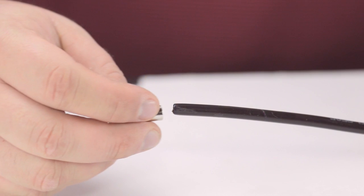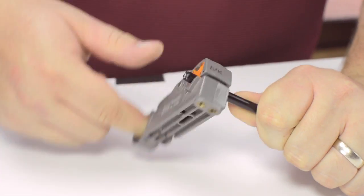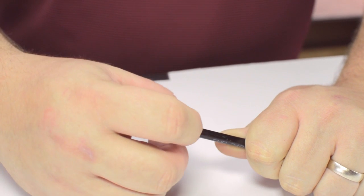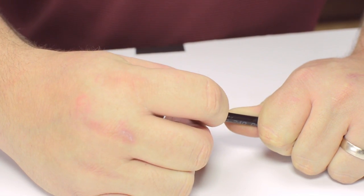Start by inserting the ferrule over the outer jacket of the cable. Then using your cable stripper, strip back the outer jacket and dielectric. The advantage of using a cable stripper is that it will strip back the jacket and dielectric at the same time.